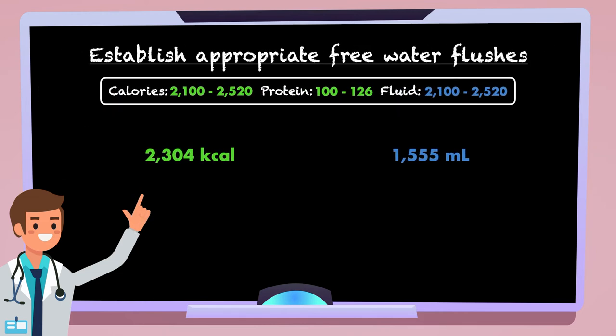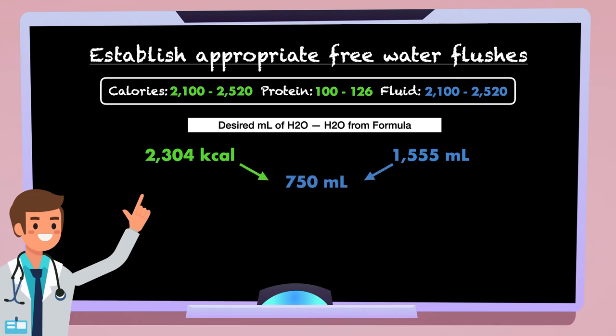It is for this reason that we have to establish appropriate free water flushes. Knowing that we want to match fluid to calories, we just need to take the desired milliliters of water and subtract the amount of water from formula. With 2304 as the desired amount and 1555 as the amount from formula, there is a water deficit of approximately 750 milliliters.